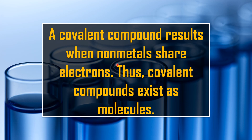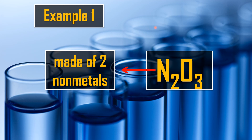A covalent compound results when nonmetals share electrons. Thus, covalent compounds exist as molecules. Covalent compounds, as we discussed previously, are the combination of two nonmetal elements. To identify if a given compound is a covalent compound, just check if the elements in the compound are nonmetals — the compound should be made of two nonmetals.